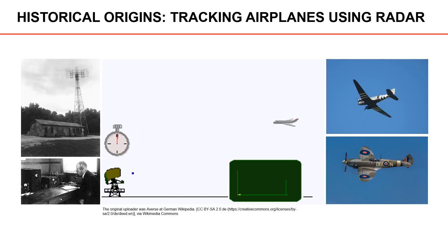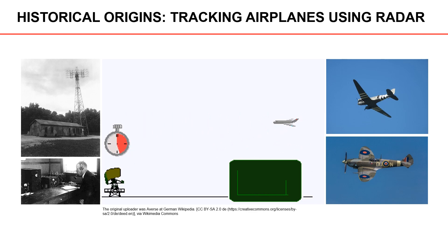The historical origins of multiple object tracking can be traced back to the Second World War, when radar stations began to be used as warning systems against hostile aircraft. The basic idea is to let the radar sensor emit energy. Some of this energy is reflected by the airplane back to the sensor, as illustrated here. Based on the time it takes for the signal to travel from the transceiver to the airplane and then back again,